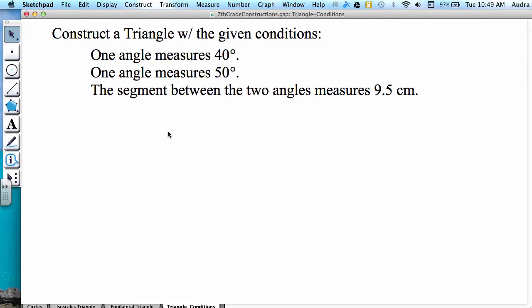This video explains how to construct a triangle in the program Geometer Sketchpad using specific conditions that are given. The first condition is that one angle measures 40 degrees. The second one is that one angle measures 50 degrees. And the third condition is the segment between the two angles measures 9.5 centimeters.